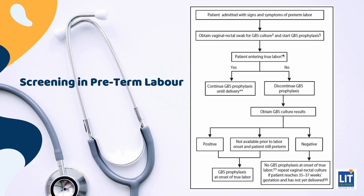For circumstances where screening results are not available, intrapartum prophylaxis should be given to women who are less than 37 weeks gestation, have membrane rupture more than 18 hours, or have a temperature above 100.4°F. Women admitted with signs of preterm labor should be screened for GBS at hospital admission unless a screen was performed within the preceding five weeks. Women with unknown GBS status or a positive screen should receive prophylaxis at admission, but antibiotics should be discontinued if she is not in true labor or if the culture is negative, resuming prophylaxis when true labor begins.